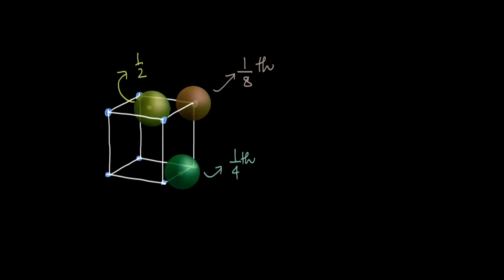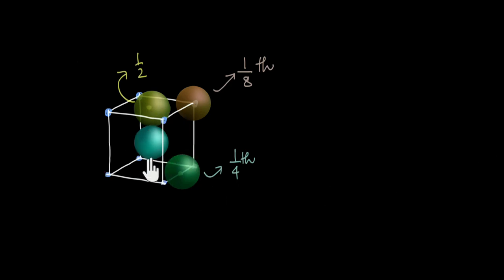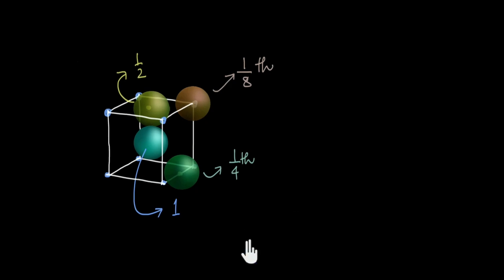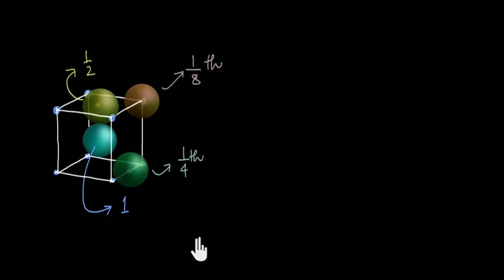Finally, consider an atom exactly at the center of the unit cell. A body-centered atom lies 100% inside the unit cell, so its contribution is one. Now that we know the contributions of atoms at different positions — corners (1/8), face centers (1/2), edge centers (1/4), and body center (1) — we are ready to calculate A_effective for any unit cell.